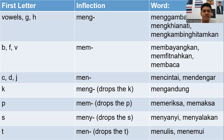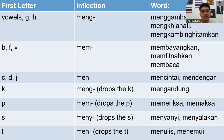If you add the prefix mem- and the root word starts with the letter p, the letter p is dropped. For example, memeriksa means to check or to examine, and memaksa means to force. The next inflection is meny- — you use meny- if the root word starts with the letter s, and the s of the root word is dropped and replaced with ny. For example, menyanyi means to sing, and menyalakan — the root word is nyala — means to turn on or to fire up.